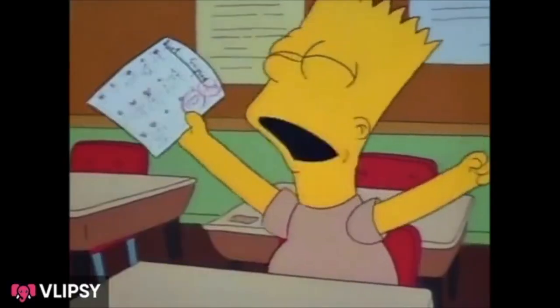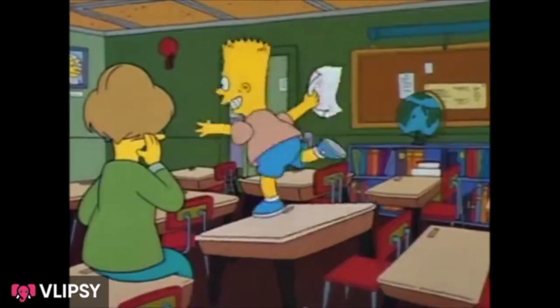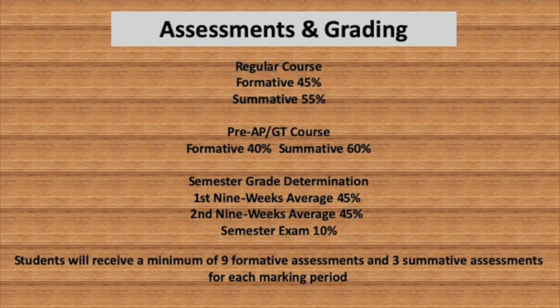Assessments and grading: if you are in the general ed course, your formatives count 45 percent and your summatives are 55 percent. If you are in the pre-AP, GT, or STEM course, you are graded at 40 percent formative and 60 percent summative. Your semester grade determination has your first nine weeks averaging being 45 percent, second nine weeks 45 percent, and your semester exams — there are two of those — will be 10 percent of your entire grade. Each student will receive a minimum of nine formative and three summative grades per nine weeks, though you will most likely have more grades than that.